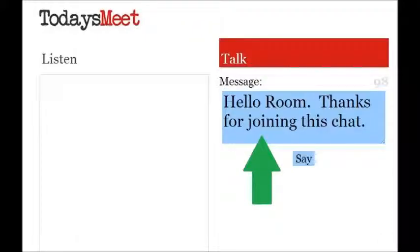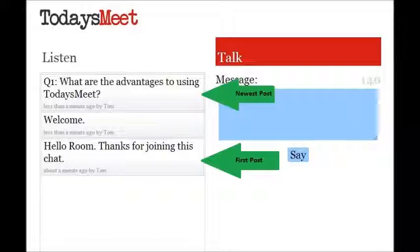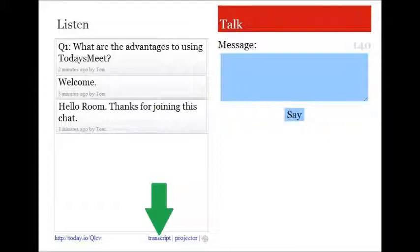You are now ready to create your first message. Type your message and then click the button that says Say. This message will now go over to the left side and to the listen. The newest post will always be at the top. The first post that you wrote during the chat will be at the far bottom. If you need to go back and see what you wrote, just scroll down and you can see all the past messages. It's also important to note that you only have 140 characters to write your message. After you push Say, you can write another message. At the bottom of the screen, there is a button called Transcript.